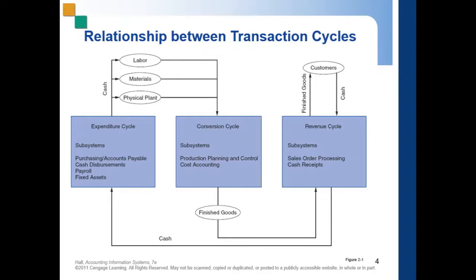Let's start with the expenditure cycle. Business activities begin with the acquisition of materials, property, and labor in exchange for cash. In the figure, as you can see, there is the flow of cash from the organization to the various providers of these resources.